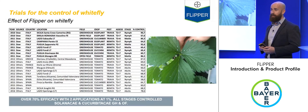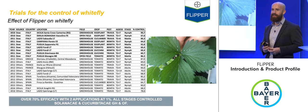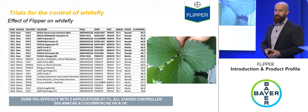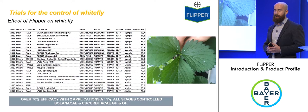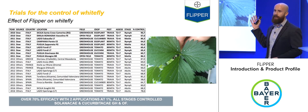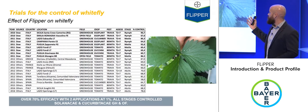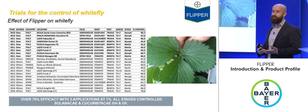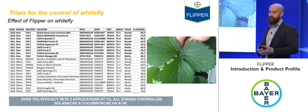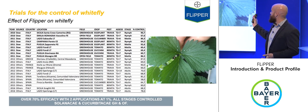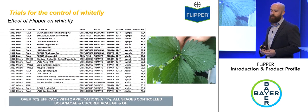Whitefly is becoming a real problem, particularly for brassicas in the Lincolnshire area. Flipper is extremely good on whitefly, with a large amount of data across a whole range of crops. Using a two-spray approach at seven-day intervals at one percent under glasshouse conditions, control levels of 60-70-80-90 percent are achieved.